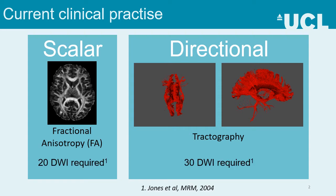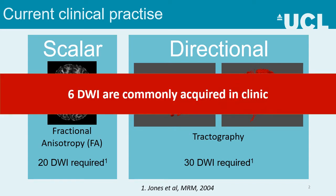For accurate estimation of the scalar measures, at least 20 diffusion-weighted images are required, and at least 30 diffusion-weighted images are required for accurate estimation of the directional measures. However, in the clinic it is common that only six directional diffusion-weighted images are acquired, leading to poor quality estimations of the scalar and directional measures.